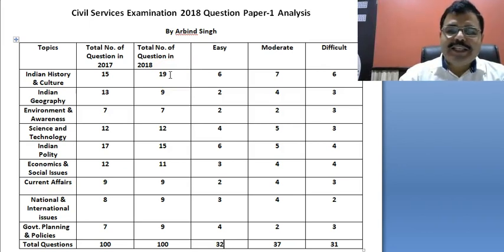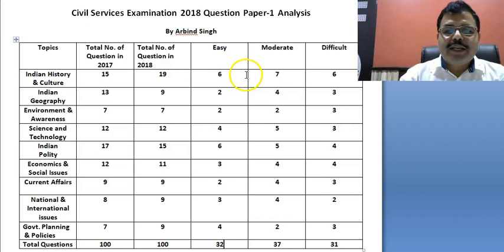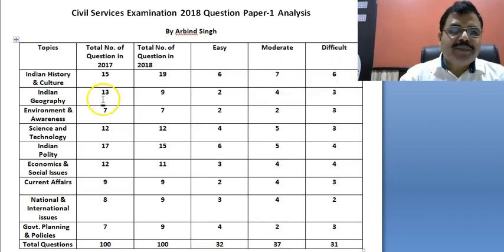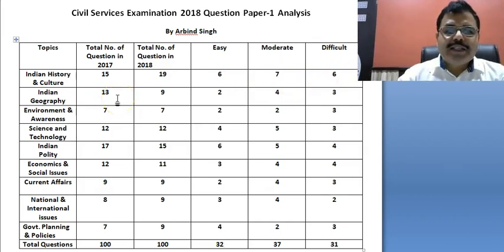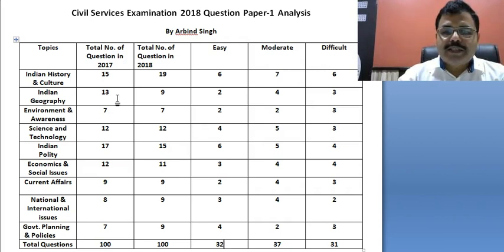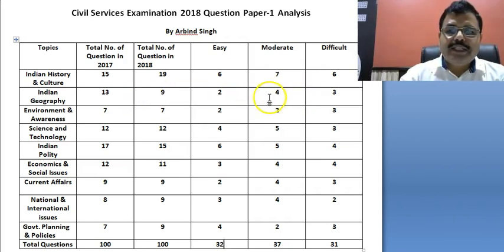In History and Culture, they asked 19 questions this year — out of them, six were easy, seven moderate, and six difficult. In Geography, comparatively fewer questions were asked; instead of 13, they asked only nine questions.